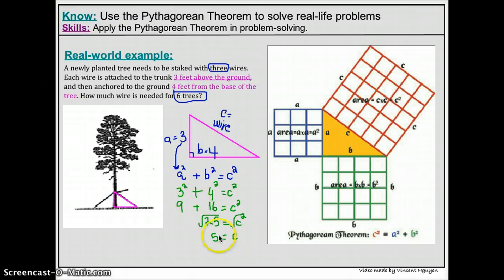However, the problem asks us much more than what we just found. So the answer here is not five, even though that's what we found and that's what we needed. This five right here is only for one wire. So technically, if you go back to your diagram and you put the measurement into your wires, you will see that each tree will need, so one tree will need how many feet of wires? One tree will need 15 feet of wires.